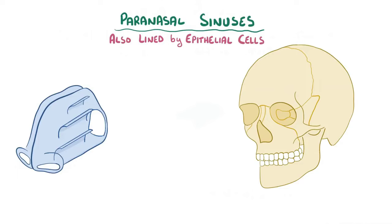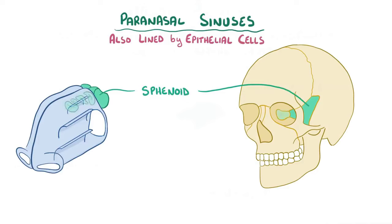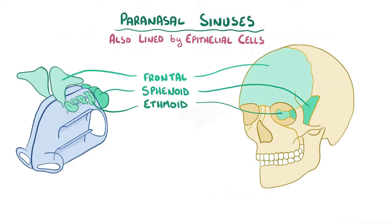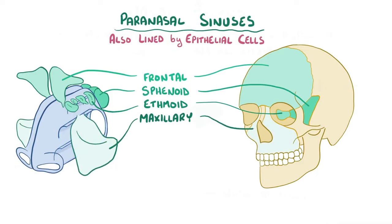The paranasal sinuses are named for the bones that house the sinus: the sphenoid, located next to the eyes; the ethmoid, between the eyes; the frontal, above the eyes behind the forehead; and the maxillary, behind the cheeks and below the eyes.